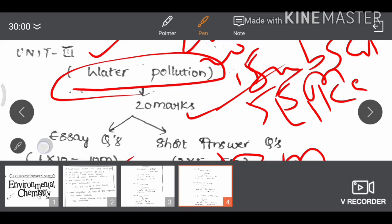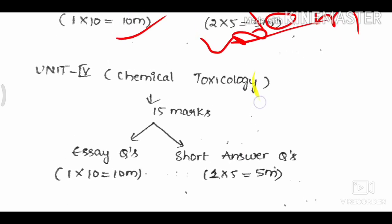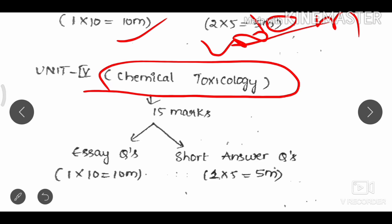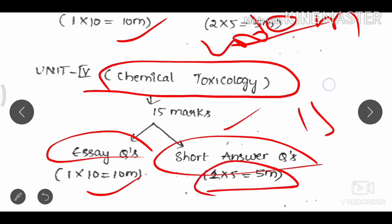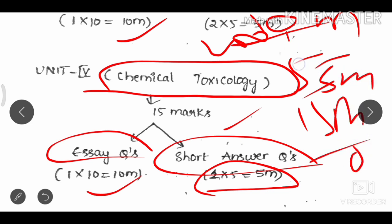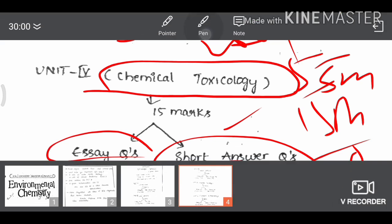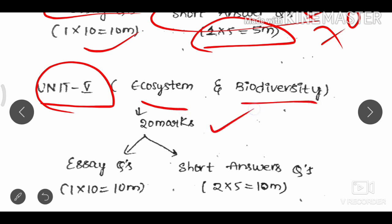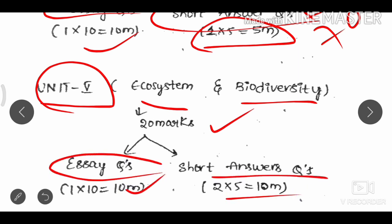Unit 4 is Chemical Toxicology, which carries 15 marks. Unit 5 covers Ecosystem and Biodiversity, carrying 20 marks — 10 marks for essays and 10 marks for short answers, with choice options.